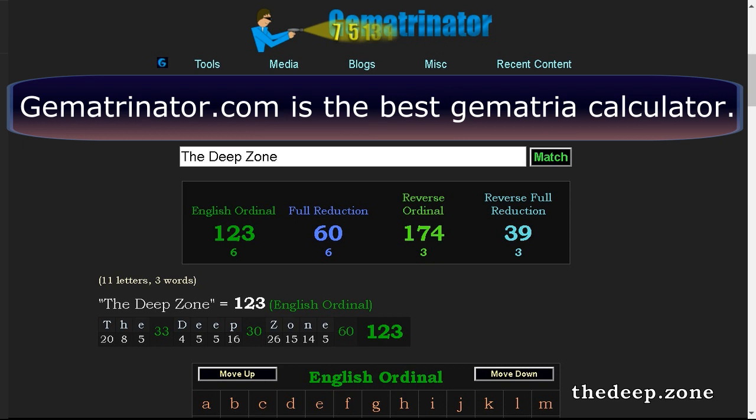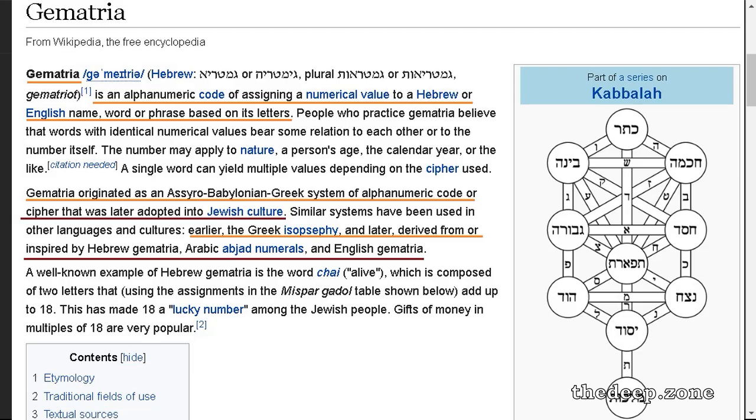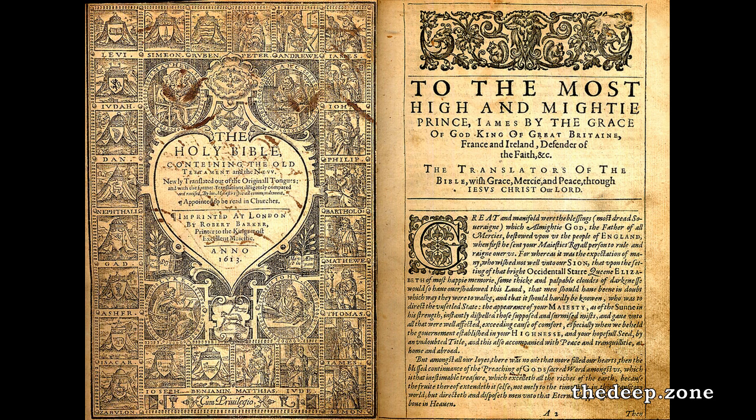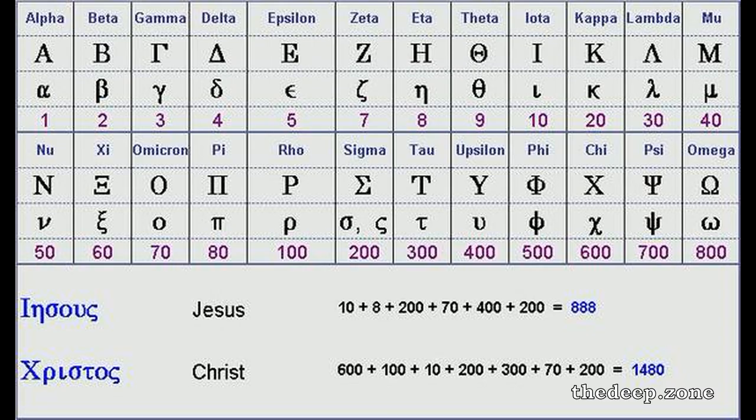Gematria is an art and a science that's been around for thousands of years. The Babylonians used it, the Sumerians used it, there's records of this. The Christian monks used it in the Middle Ages. The Bible is full of Gematria, both in the English King James translation and in the original Greek, there's a lot of Gematria, and the Hebrew in the Old Testament.